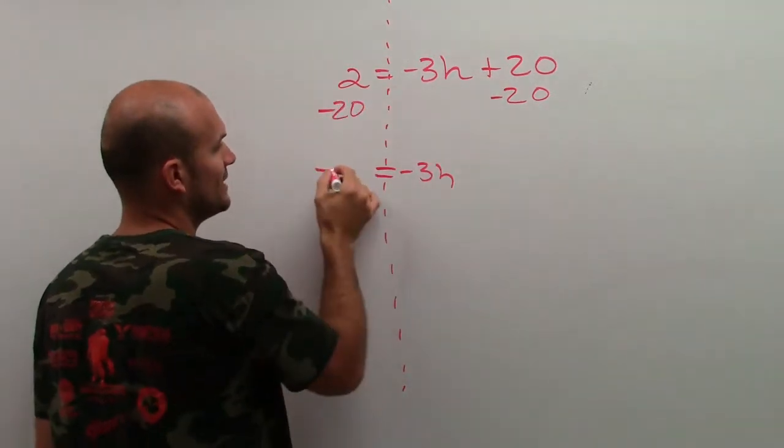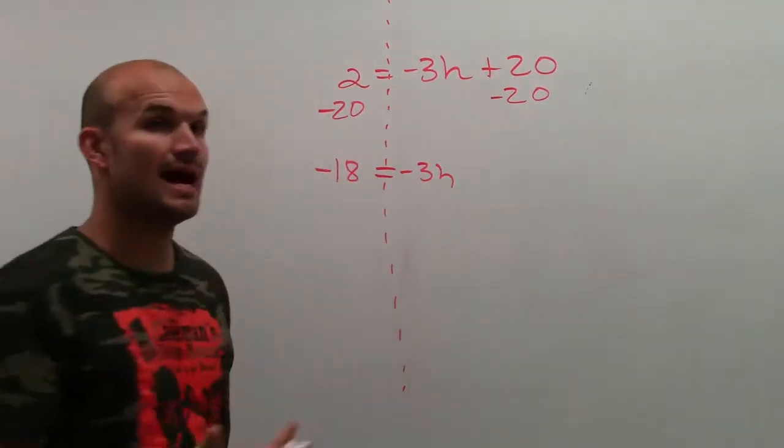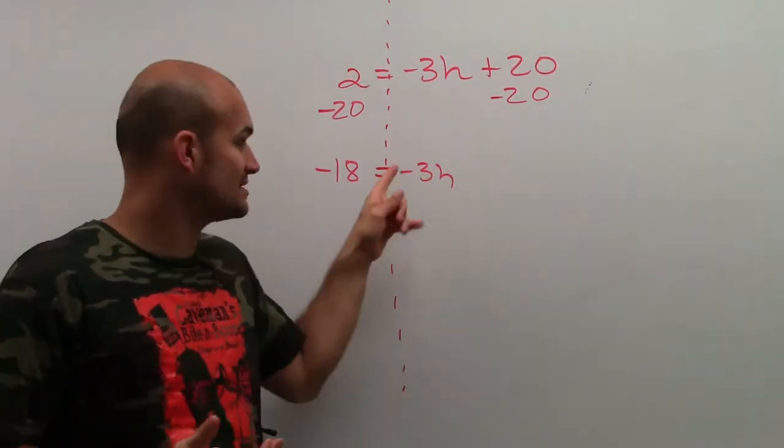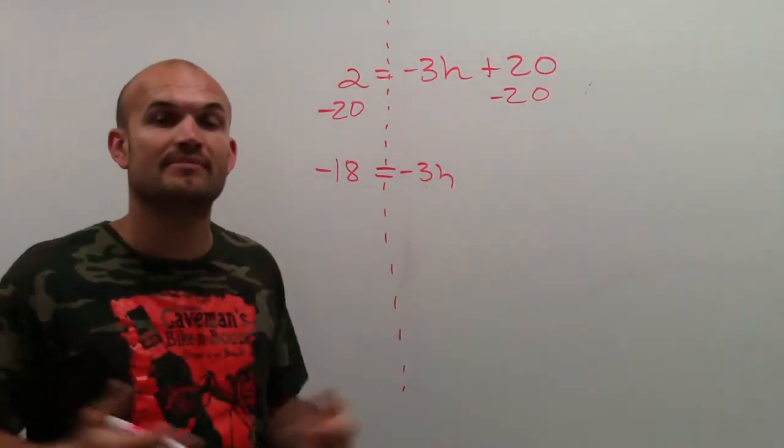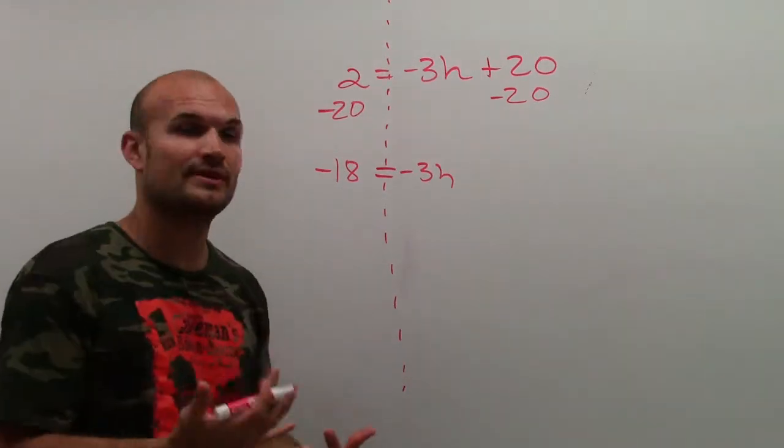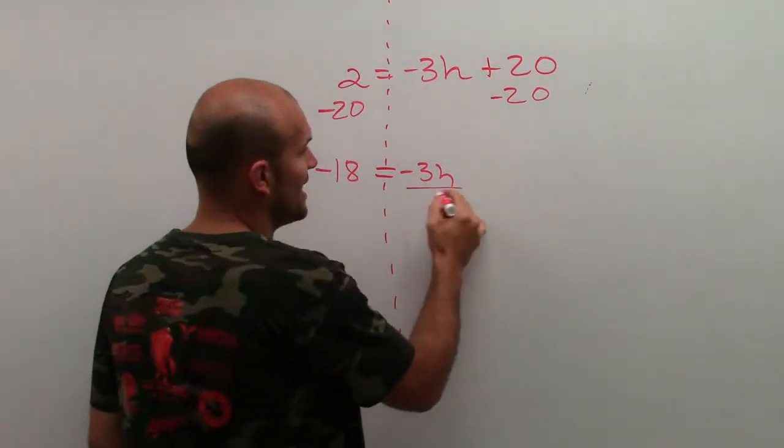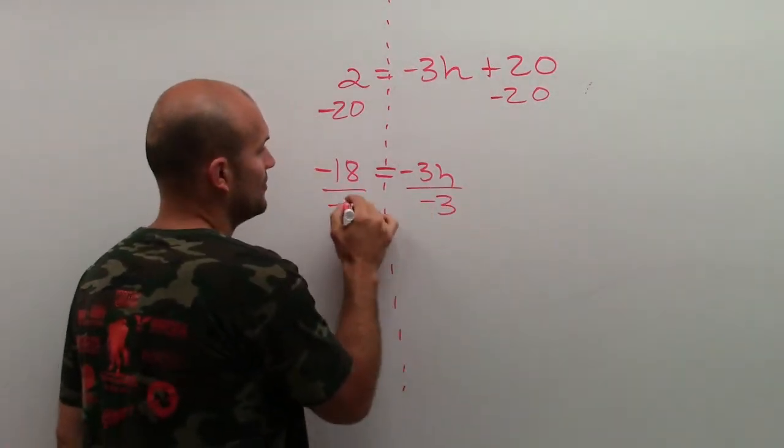2 minus 20 is negative 18. Now I need to undo multiplication by negative 3, because that negative 3h means negative 3 times h. So the reverse inverse operation of that would be to divide by negative 3 on both sides.